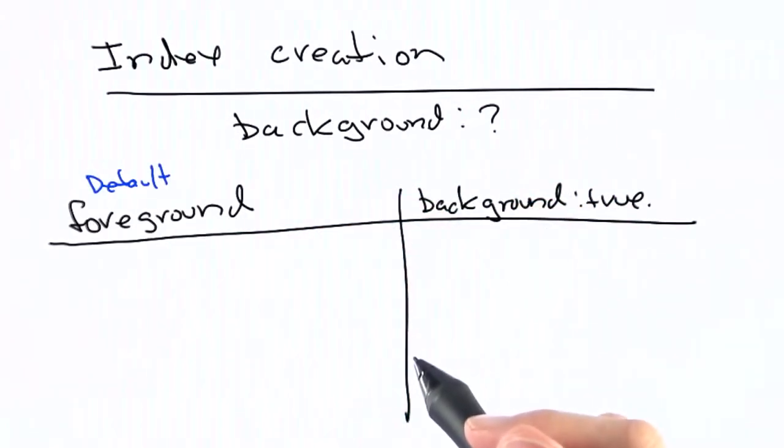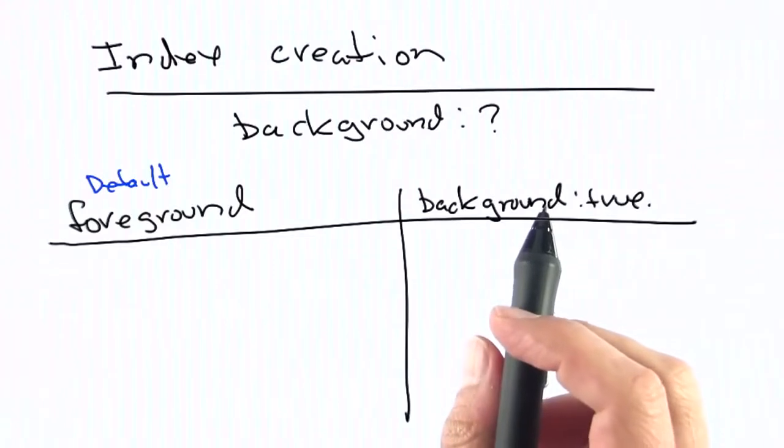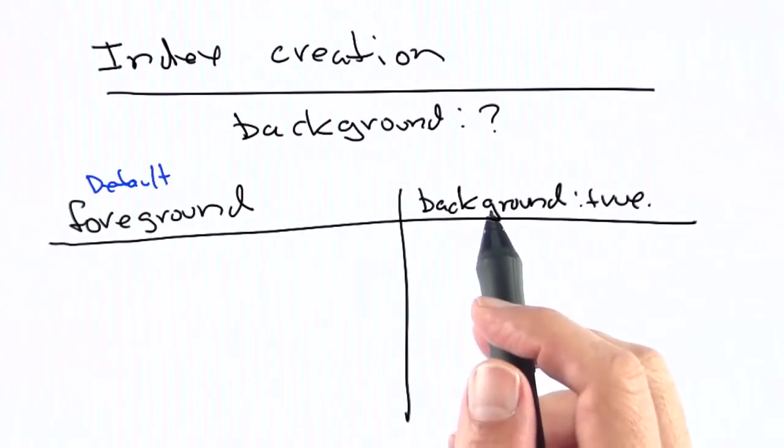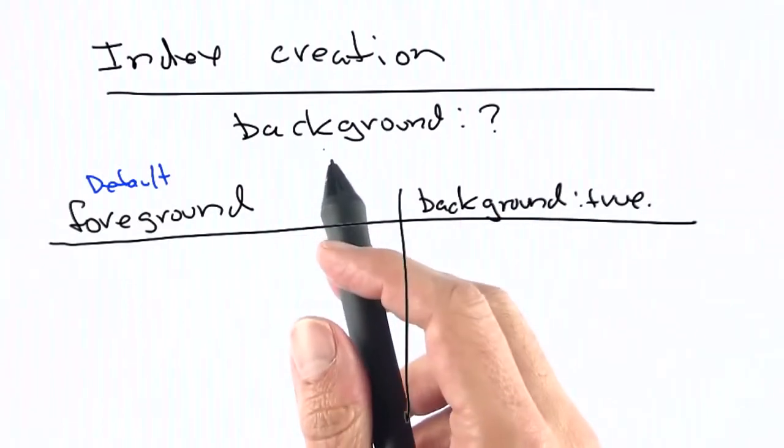By default, an index is created in the foreground in Mongo, and when it's created in the foreground, it blocks all other writers. If you want, you can run it in the background, in which case it won't block other writers.